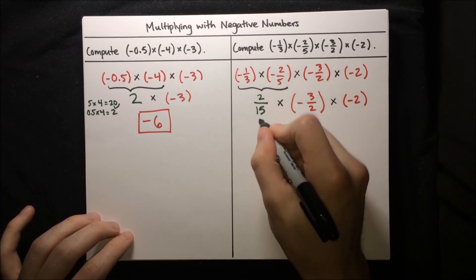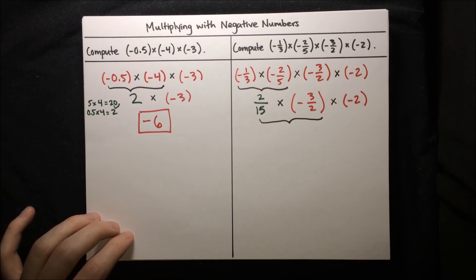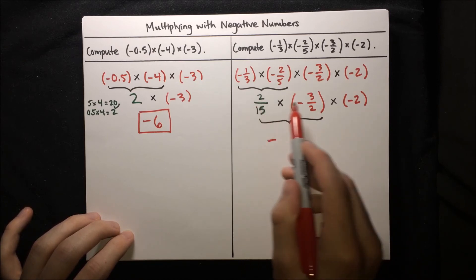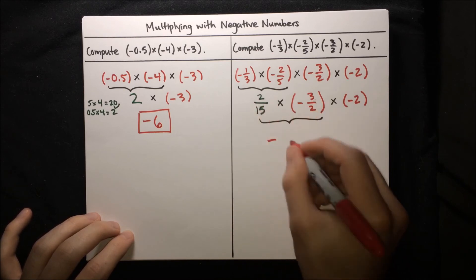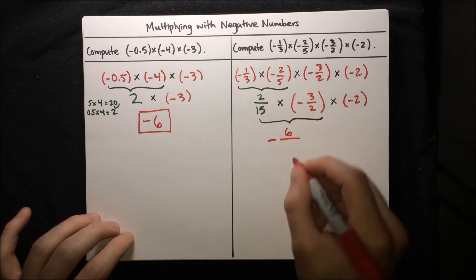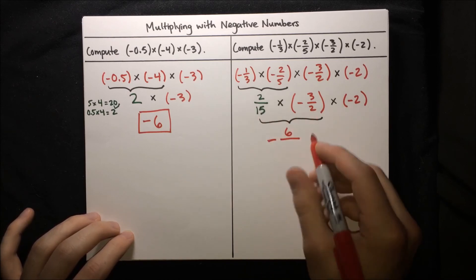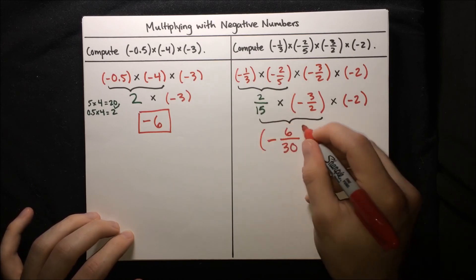For 2/15 times negative 3/2: this is positive times negative — only one negative — so the result is negative. Multiply the numerators: 2 times 3 is 6. Multiply the denominators: 15 times 2 is 30. So we get negative 6/30.